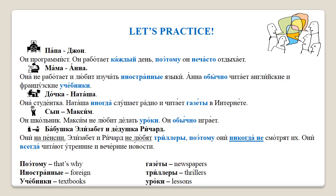Дочка Наташа. Она студентка. Наташа иногда слушает радио и читает газеты в интернете. — Daughter Natasha. She is a student. Natasha sometimes listens to the radio and reads newspapers on the internet. Сын Максим. Он школьник. Максим не любит делать уроки. Он обычно играет. — Son Maxim. He is a schoolboy. Maxim doesn't like to do his homework. He usually plays.